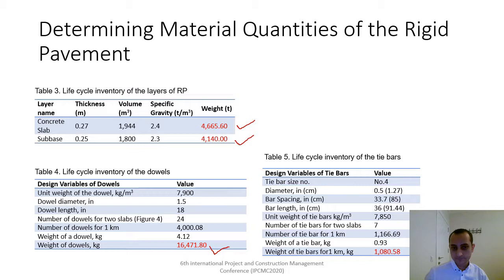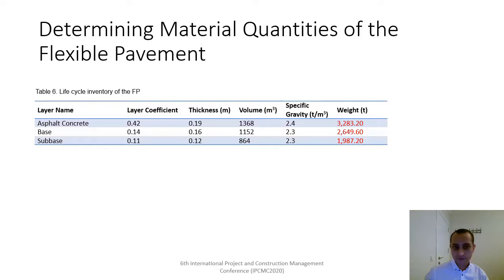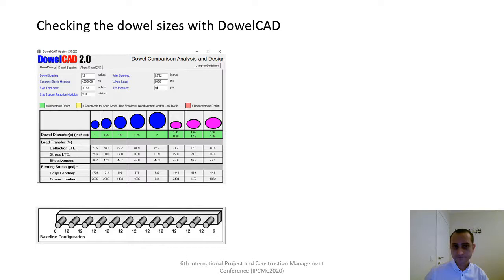For the flexible pavements, you can see the asphalt concrete quantities. We should use this amount of hot-mixed asphalt, and we should use this total amount of aggregates to construct the base and sub-base courses. We also check the dowel sizes to make sure the dowels are sufficient to bear the stress.